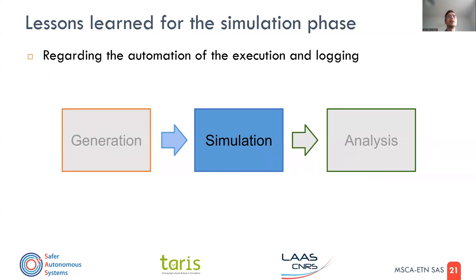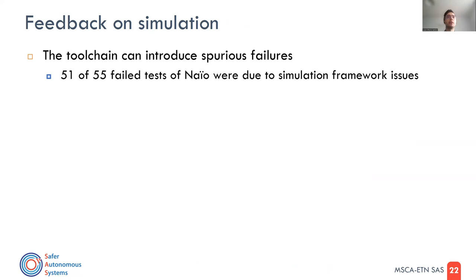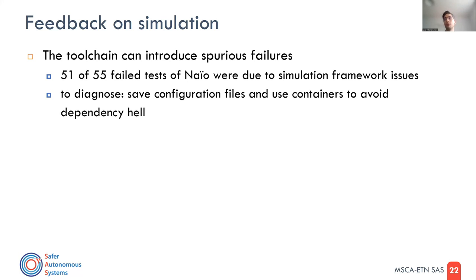Regarding automation of execution and logging inside the simulation phase: of course the system under test can introduce failures, but the tool chain can also introduce failures — as shown by the 51 NIO test cases that failed due to the simulation framework being in development. To diagnose this, you always need to save configuration files, because some developers treat configuration files differently from code, but you should have version control for both.